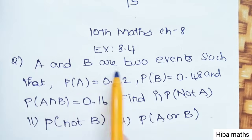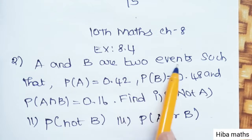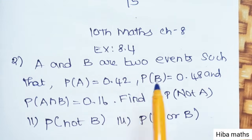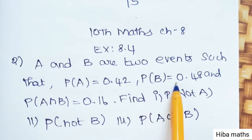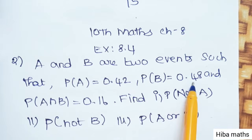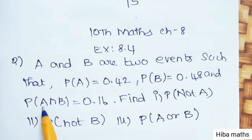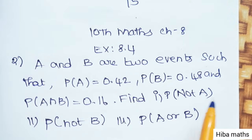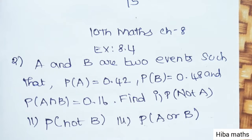A and B are 2 events such that P(A) = 0.42, P(B) = 0.48, and P(A intersection B) = 0.16. Find P(not A), P(not B), and P(A or B).